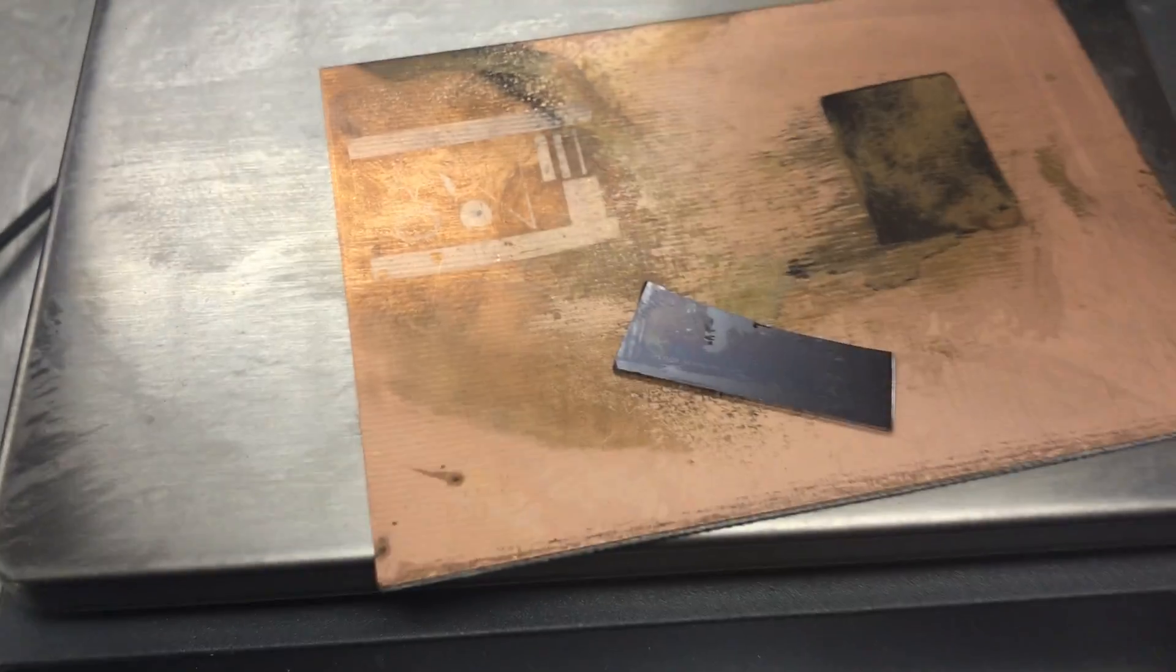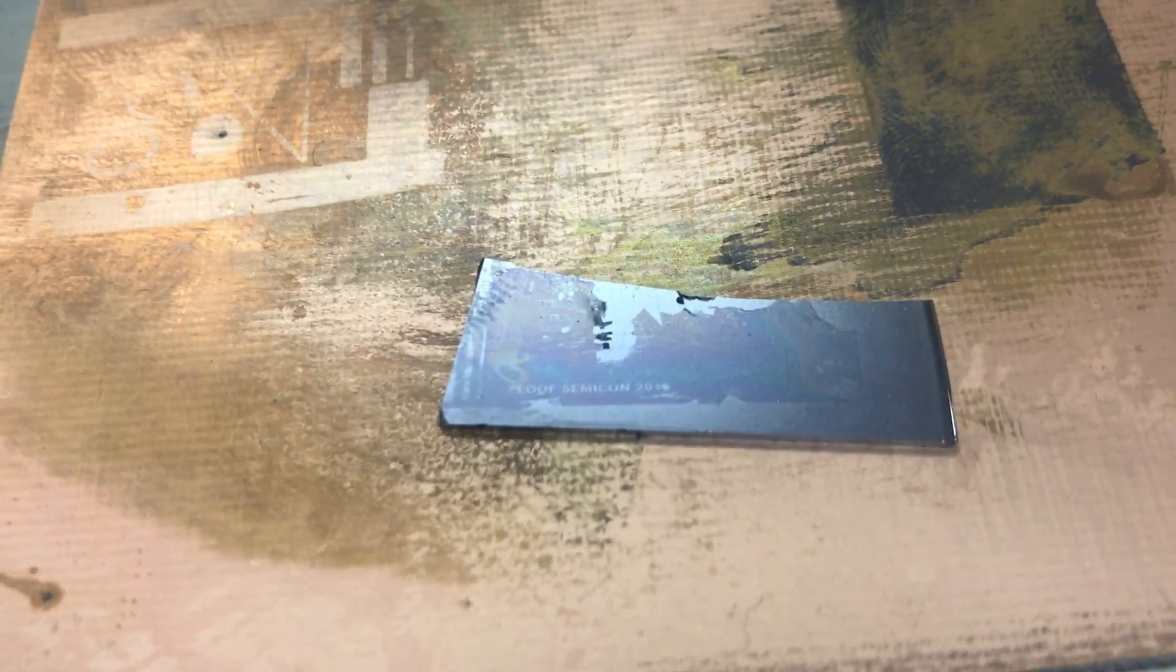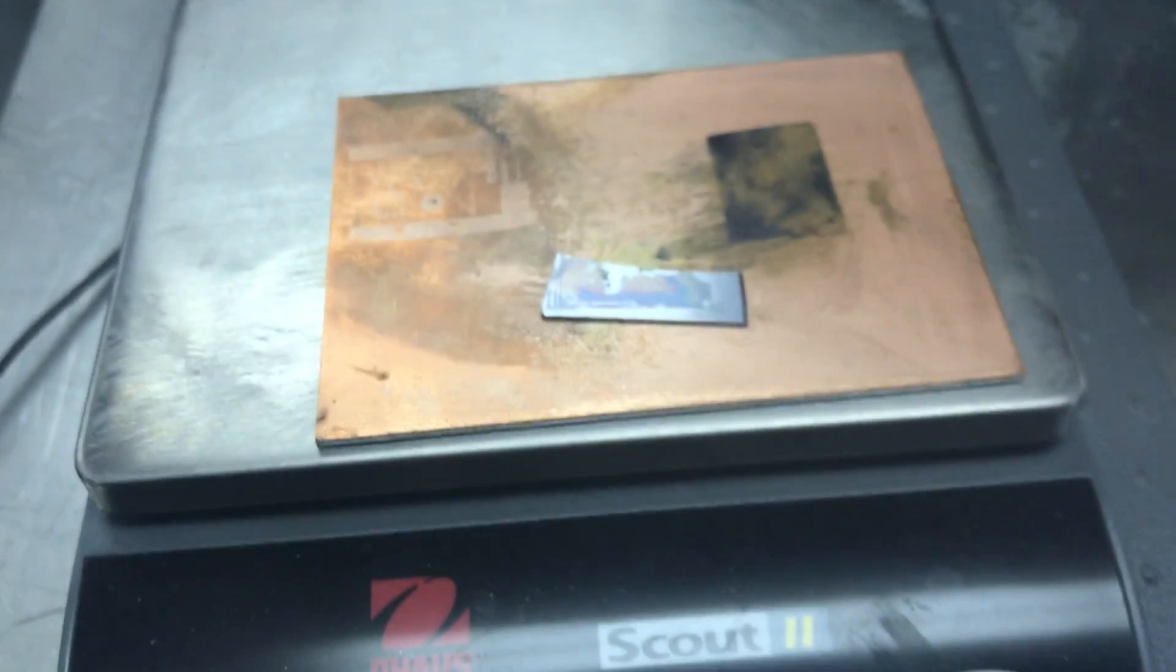These are some photolithography tests. This is like a copper piece of material and then this is on a silicon wafer. It says my last name and then Semicon 2016. That was one of the first ones. That's why it looks pretty bad.